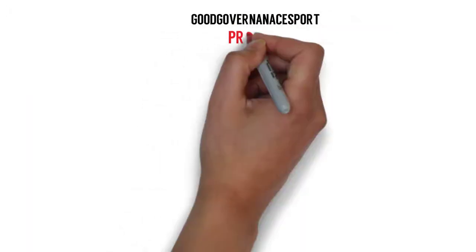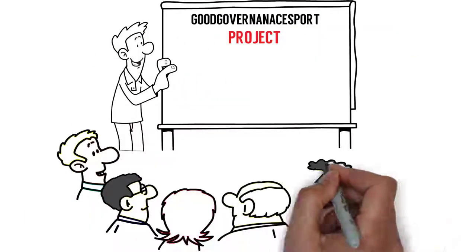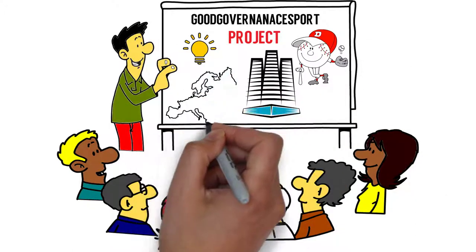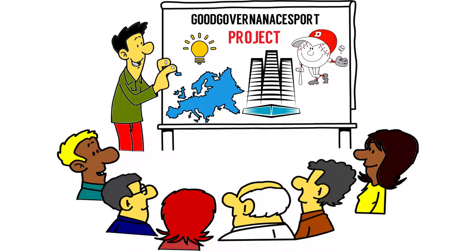The hashtag Good Governance Sport Project is an initiative aiming to bring innovative ideas for sports and sports organizations in Europe at local, national and European level.